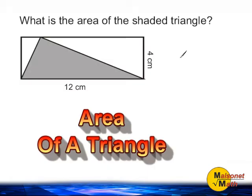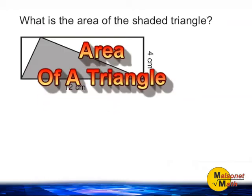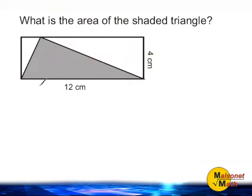This problem is asking us to figure out the area of the shaded triangle. Notice that our triangle is located inside of a rectangle, and two of the three vertices of our triangle match up with two of the four vertices of our rectangle.